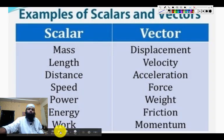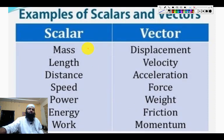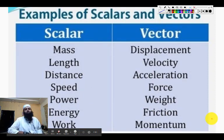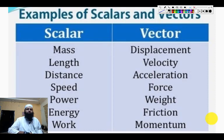These are some of the common quantities classified as scalars versus vectors. On the scalar side: mass, length, distance, speed, power, energy, and work — these are all scalars. On the vector side: displacement, velocity, acceleration, force, weight, friction — friction is just a type of force — and momentum, among many others.